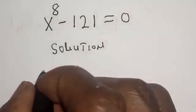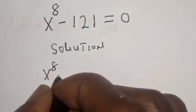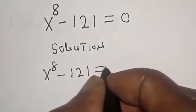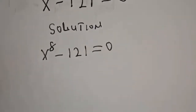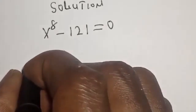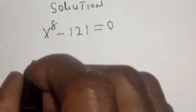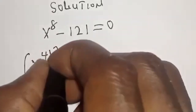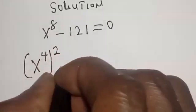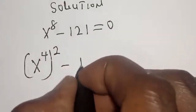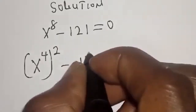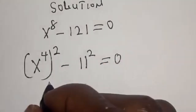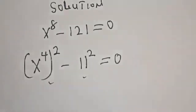Solution: s raised to power 8 minus 121 is equal to 0. So, s raised to power 8 is s raised to power 4, squared, minus 121, which is 11 squared, is equal to 0. This is a difference of two squares.